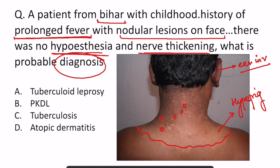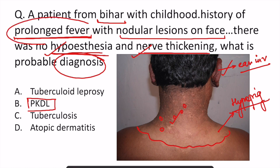We know that hypopigmented lesions with nodular lesions and ear lobe involvement are seen in leprosy. However, there is no sensory loss and no nerve thickening here — both are features of leprosy. So the examiner is not talking about leprosy; the examiner is talking about post-kala-azar dermal leishmaniasis (PKDL).